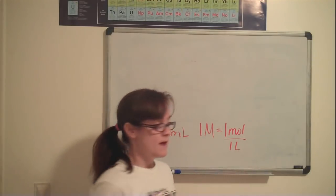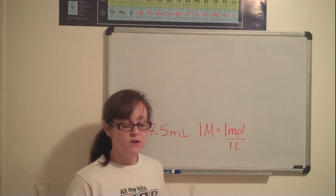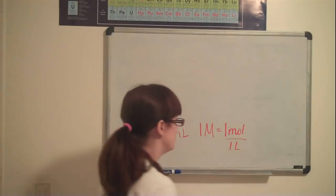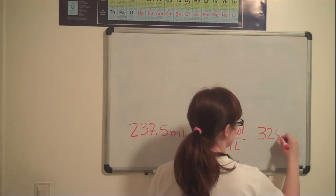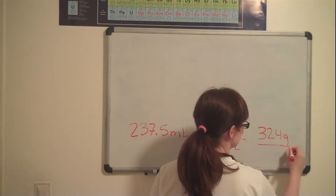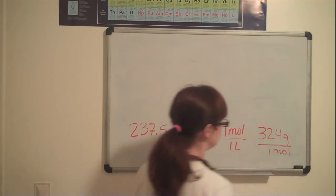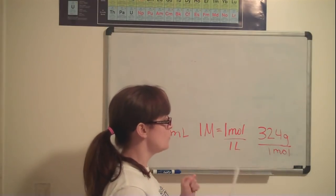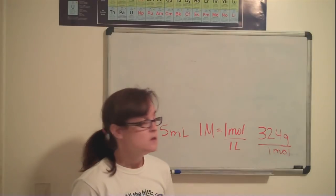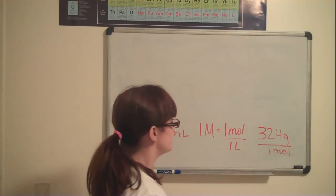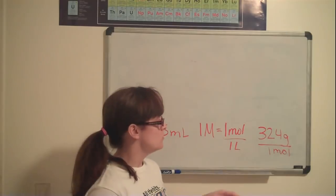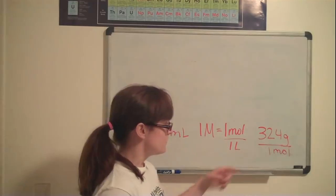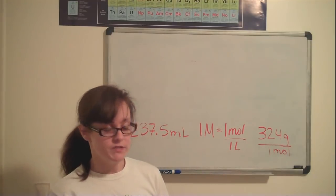Then you have your molar mass, which was given to you, which is very nice, because usually you have to use the periodic table to calculate it. Your molar mass is 324 grams per one mole. So here are the numbers that we can work with. We know that our final units need to be in grams. So we can work backwards and cancel out all the rest of the units until the only units that are left in the problem are grams. And we're going to be using stoichiometry to do this.